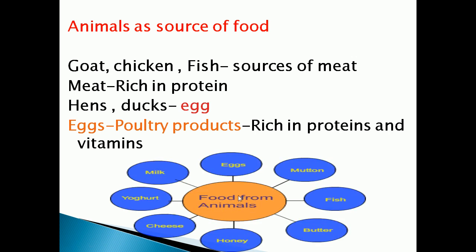In this picture we can see what food we will get from animals. We will get eggs, mutton, fish, butter, honey, cheese, yogurt, and milk.